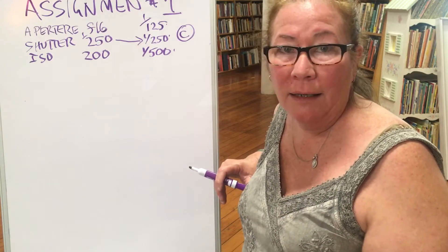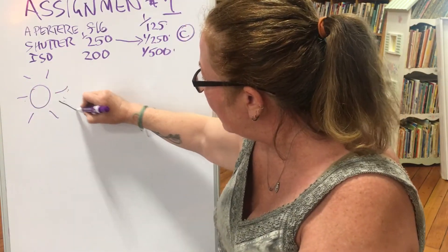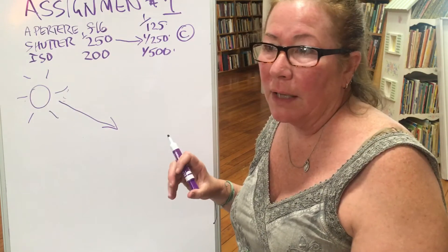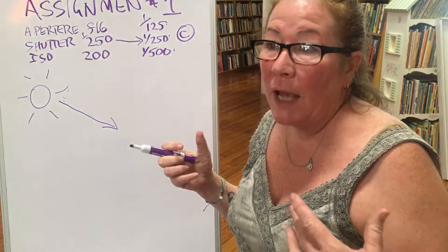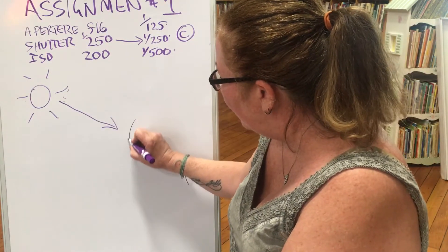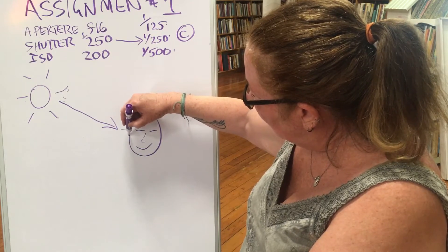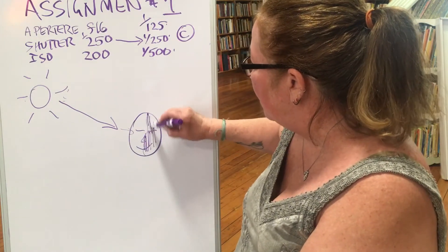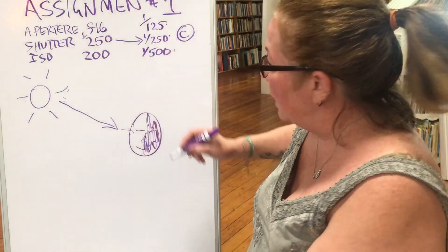Pick a subject you can put out in the sun, and make sure the sun is coming from the side. So if you have a friend posing, or a figurine, a Barbie doll — students have even photographed fire hydrants — you want the sun hitting them from the side of the face, causing strong shadows on the other side. That side will be in shadow, with the sun coming from the other direction. The first set of three photographs you're going to take in direct light.